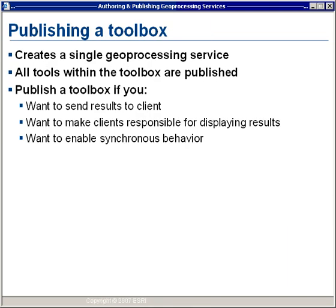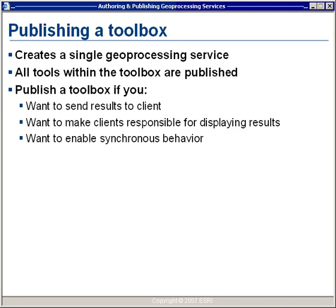You can choose to publish a toolbox as a standalone object, which creates a single geoprocessing service where all tools within the toolbox are published. You can have several geoprocessing tools that do high-level GIS analysis and publish them as a library that other users can take advantage of. The advantage is that you can send results to the client and make the client responsible for displaying those results. You can also use what we call synchronous behavior, a behavior that can be assigned to any geoprocessing service.